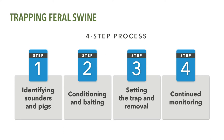Second, once a trap has been set up, it's important to take your time and condition the pigs to freely enter and leave the trap so that most, if not all, members of the sounder can be captured in one trapping event. Third, once animals are conditioned to the trap, it can be set to capture and remove pigs. And fourth, it's important to continue trapping until all of the pigs identified in step one have been removed.